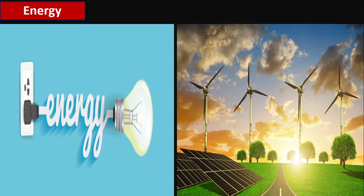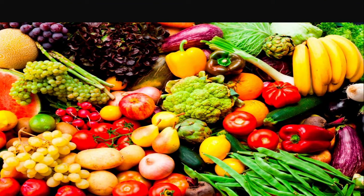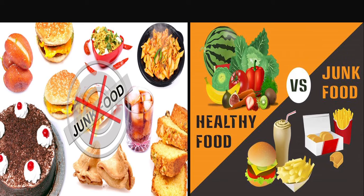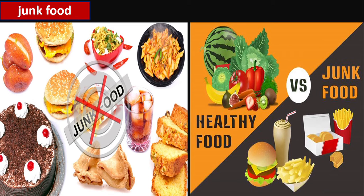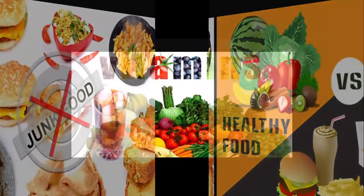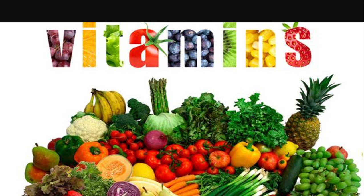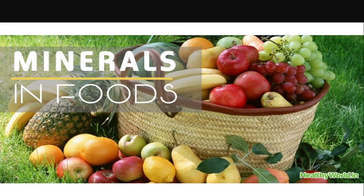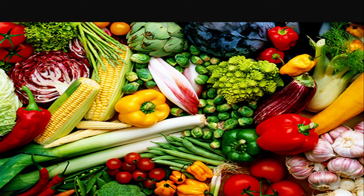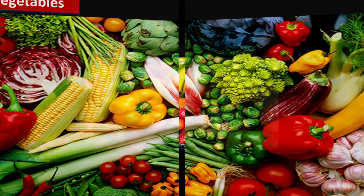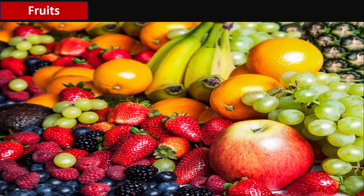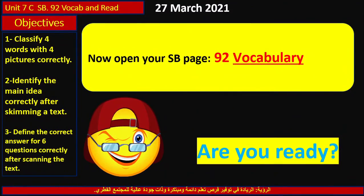Okay, try to guess the meaning through the pictures. What can you see here? Great — healthy food! What about this one? This is junk food — junk food is unhealthy. So the word is 'junk food.' What can you see in this picture? A lot of healthy food containing lots of vitamins and minerals. And for the last one, here we have a lot of vegetables and fruits. Great — that's it!